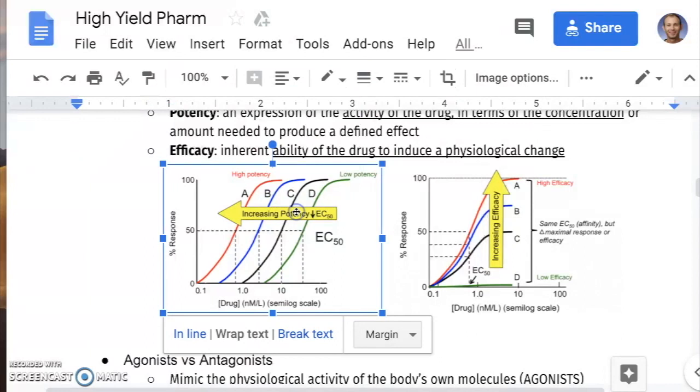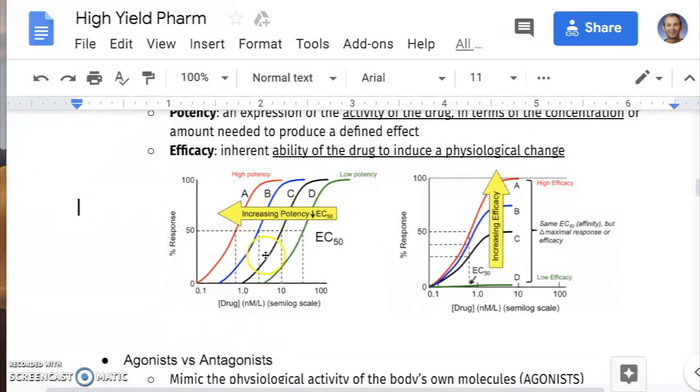What you need to know is this graph that you will be asked to label. On the x-axis here we have how much of the drug, on the y-axis it's the response. So if you get a huge response for a small amount of drug, you'll be this graph on the left, or this curve on the left, and that's what you need to choose.